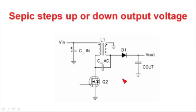The power supply works by controlling the conduction angle of Q2. When Q2 is turned on, the input voltage is applied to the primary of the coupled inductor shown here, and it is also reflected to the secondary of the coupled inductor. The voltage out of the transformer goes negative, and during the on time, recharges the coupling capacitor.